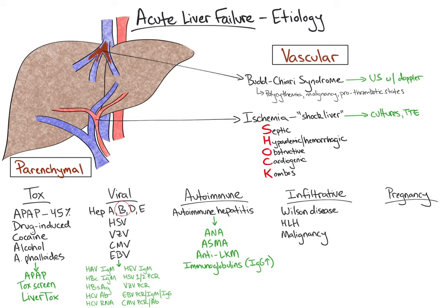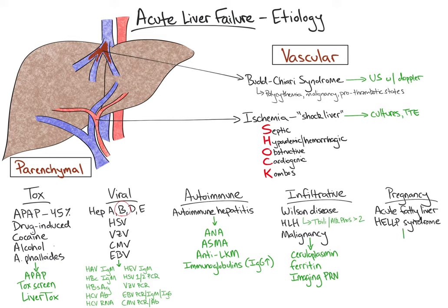Wilson disease is suggested by a history of hepatic, neurologic, and psychiatric abnormalities. On LFTs, a ratio of total bilirubin to alkaline phosphatase greater than 2 may be suggestive. To work up infiltrative etiologies, we obtain a ceruloplasmin, ferritin, and additional imaging if necessary. Pregnancy-associated etiologies include acute fatty liver of pregnancy and HELLP syndrome. A urine and serum beta-HCG should be obtained. Overall, ischemia, acetaminophen, drug-induced, hepatitis B virus, and autoimmune hepatitis account for approximately 80% of acute liver failure cases in the USA.